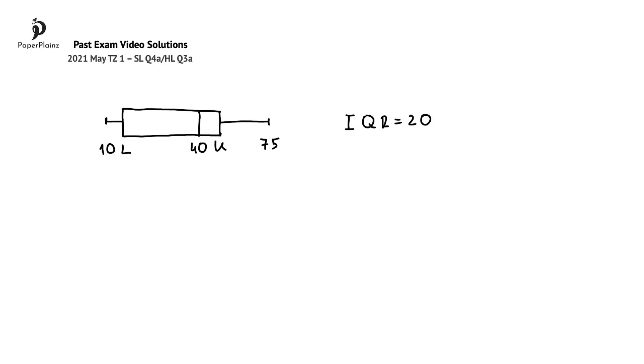In this question part, we have to find the minimum possible value of u, the upper quartile.